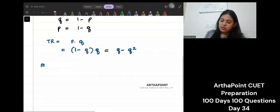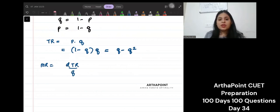What will be marginal revenue? How total revenue changes as quantity changes? We just have q as the factor. So if I differentiate this, I will get 1 minus 2q. Right.